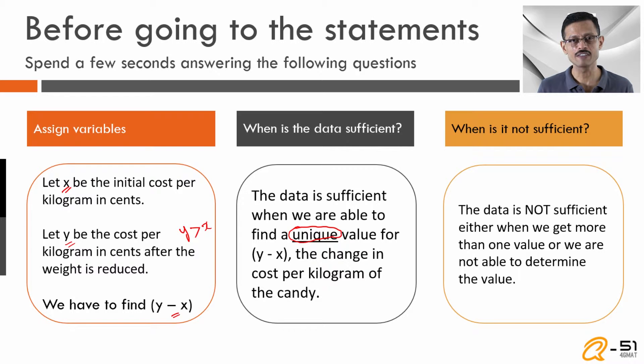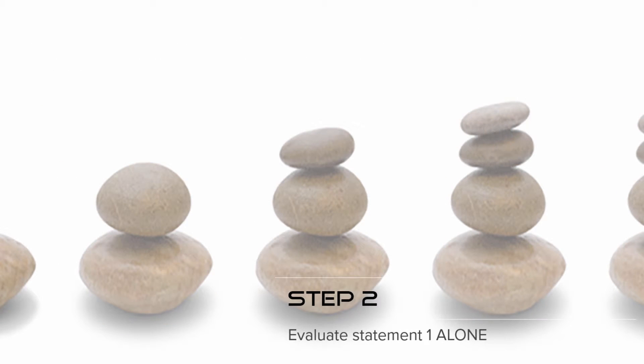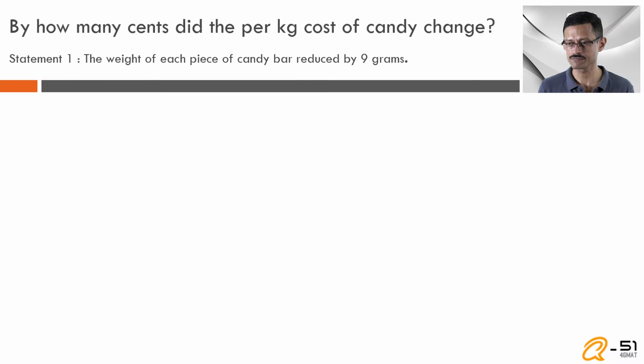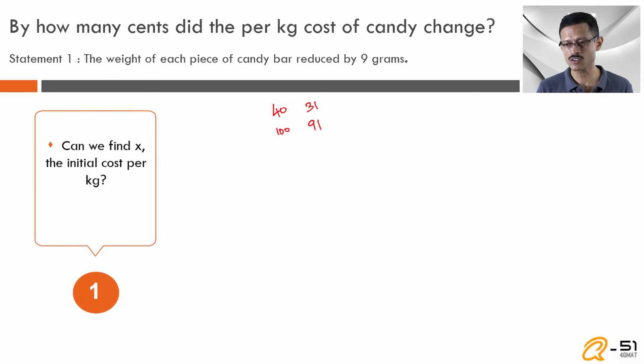Let's go to step number two where we will evaluate statement 1 alone. When evaluating statement 1, just look at statement 1 and not at anything else. In addition, you can use only the data from the question stem. Statement 1: the weight of each piece of candy reduced by 9 grams. So we have reduced—if initially it was 40 grams, it's come down to 31. If initially the weight had been 100 grams, it has come down to 91. We know how much weight each candy reduced.